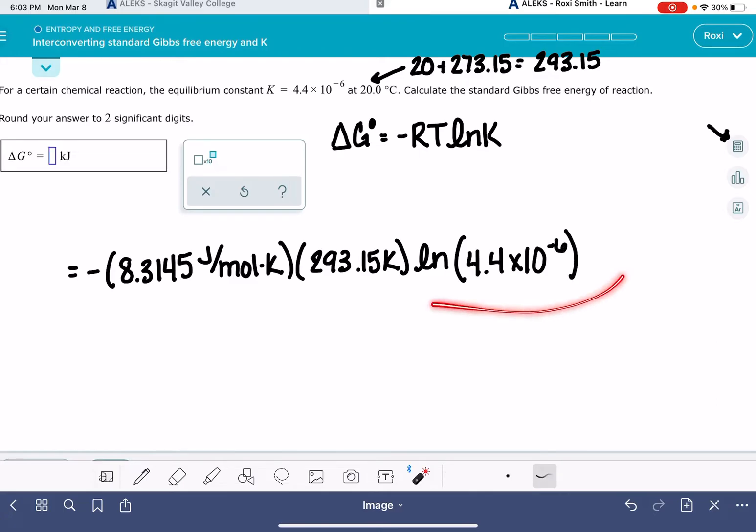So we're going to put all of this into our calculator. I would start with the natural log portion and solve that part first, and then multiply it by 293.15, and then multiply it by 8.3145. And don't forget to change the sign because of the negative sign out in front.